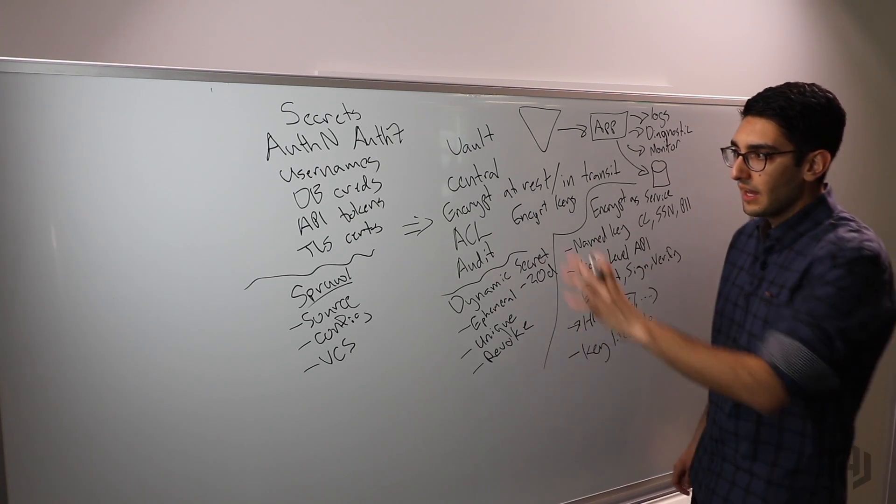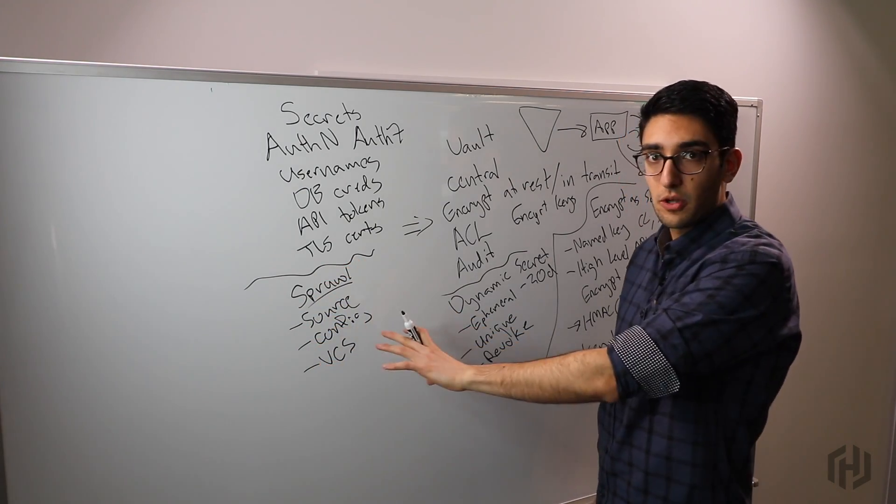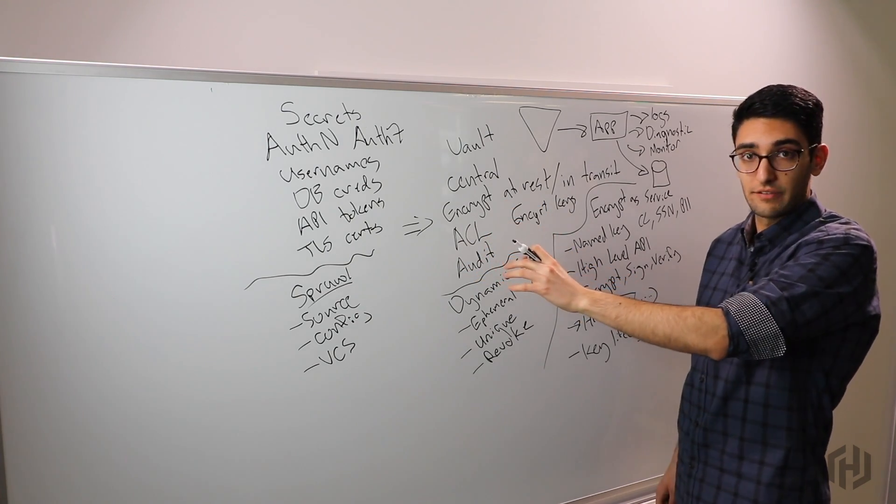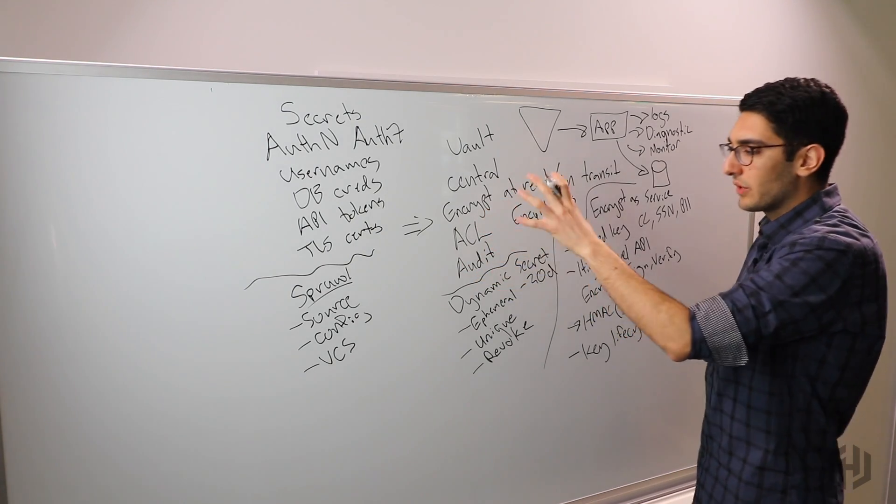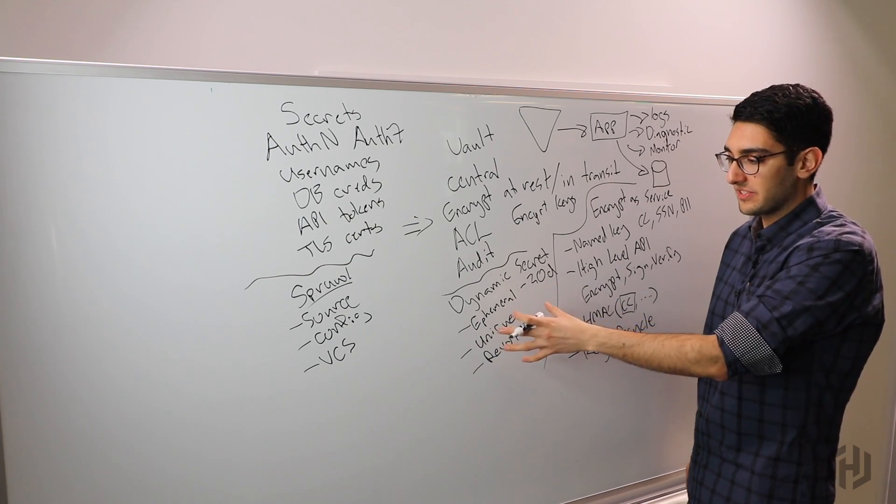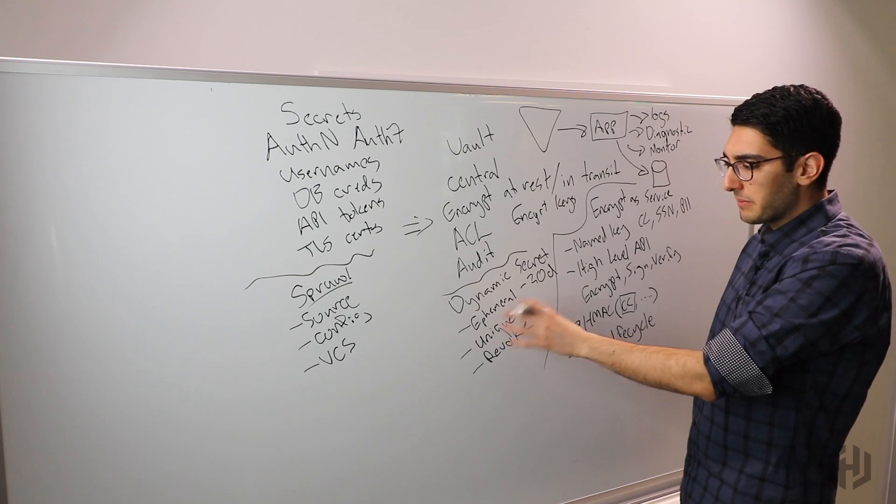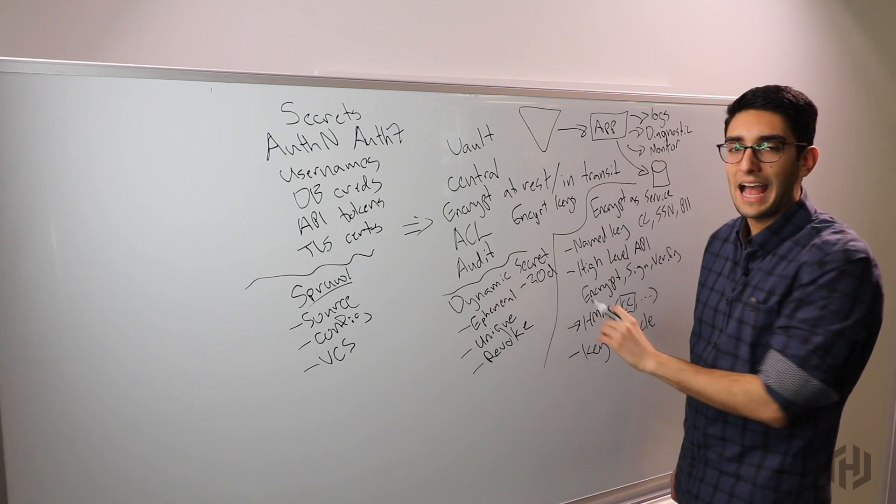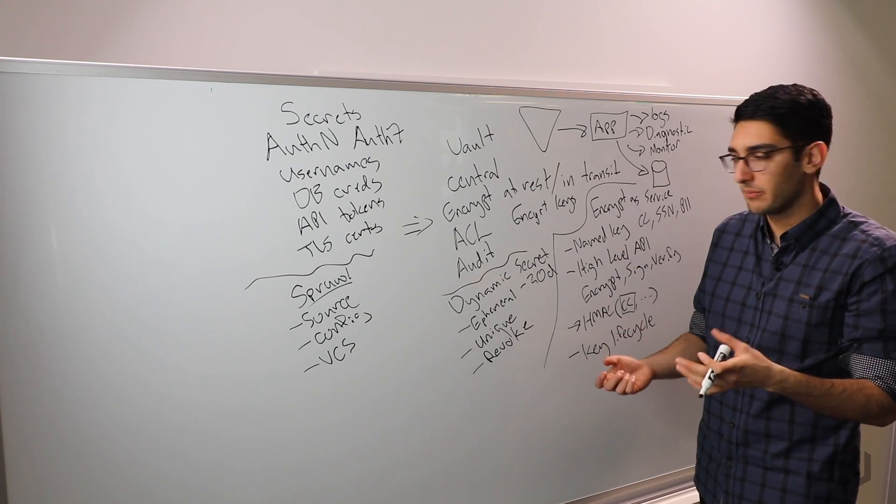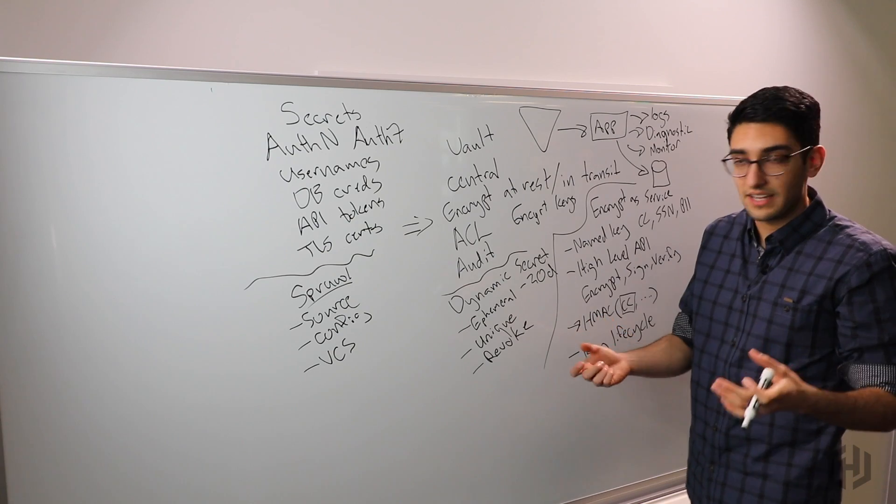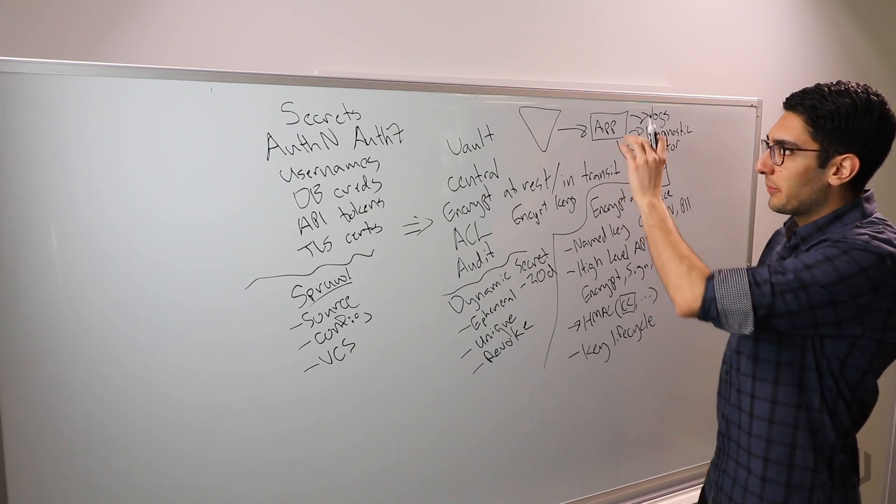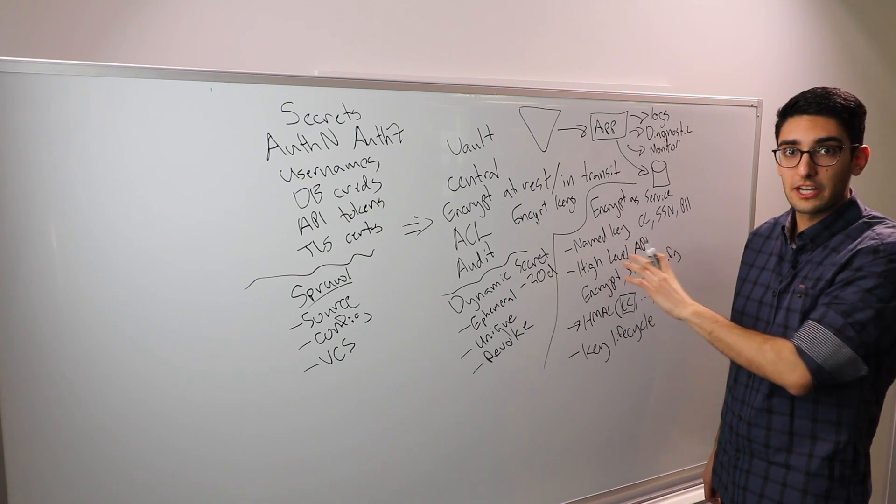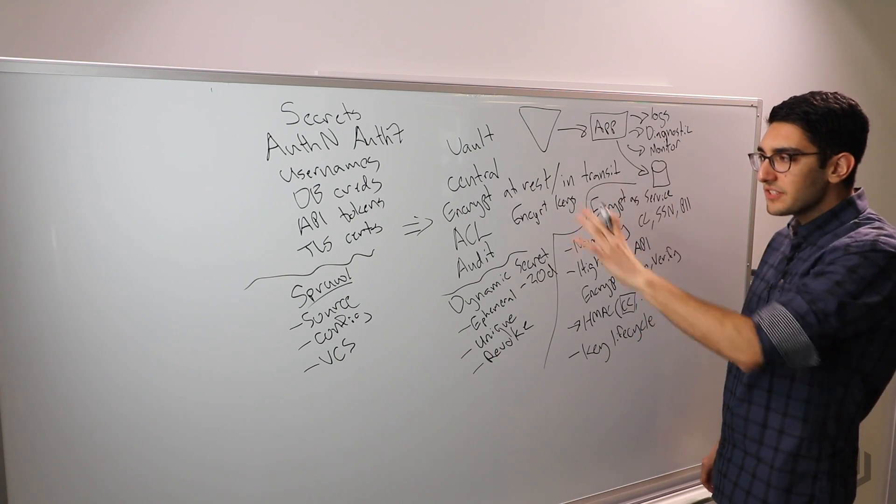In practice, these end up being the three major challenges that we're trying to help developers with. How do we move these credentials out of plain text and sprawled across many different systems into a scenario where they're centrally managed with tight access control and clear visibility? How do we go even further and protect against applications that aren't necessarily to be trusted in keeping secrets by being ephemeral, creating a moving target where what we're managing is that the web server should have access to the database and that credential is dynamic instead of static? And lastly, how do we help the application protect its own data at rest through key management and high-level cryptographic offload?